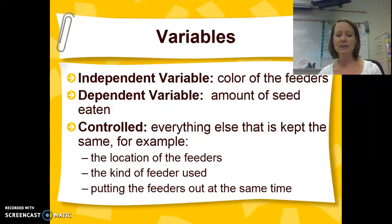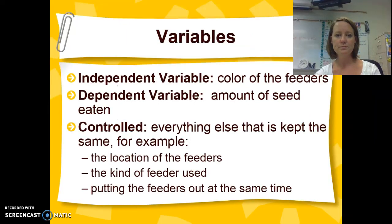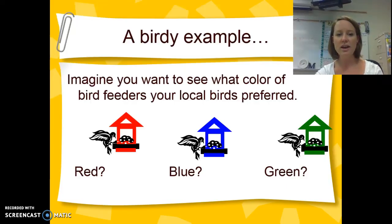Our dependent variable we would measure at the end, and that would be the amount of seed eaten. We would know that whichever of our birdhouses had the least amount of seed left is the one that the birds prefer. Our controls are everything that's kept the same — all of our feeders need to be located in the same general area, they are all the same type and shape, and we're using the same type of food. Everything other than our independent variable is kept the same.